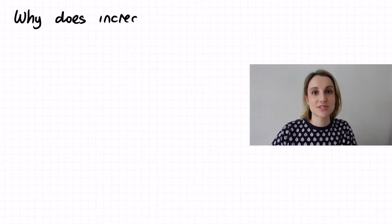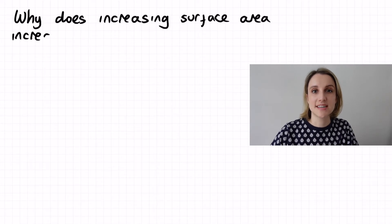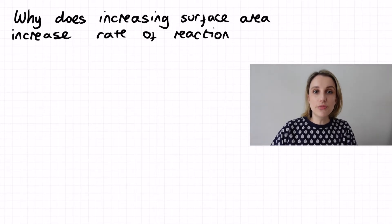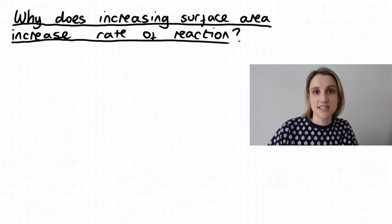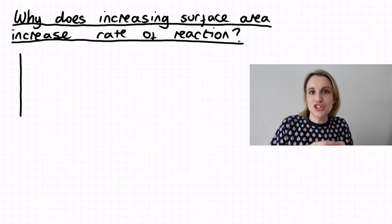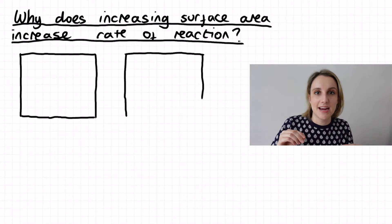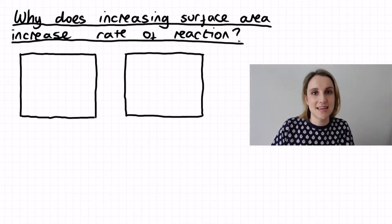Let me draw some diagrams to show you what I mean by increasing surface area. So for a low surface area substance, we normally think of like a chunk of calcium carbonate or a strip of magnesium, something that's a big piece.